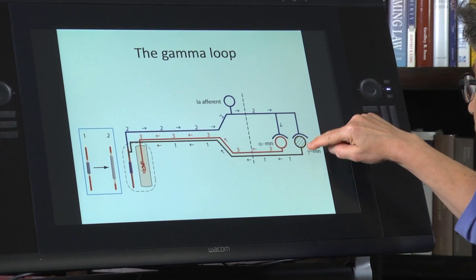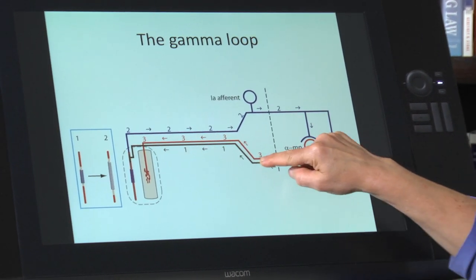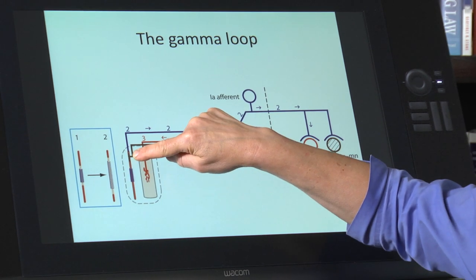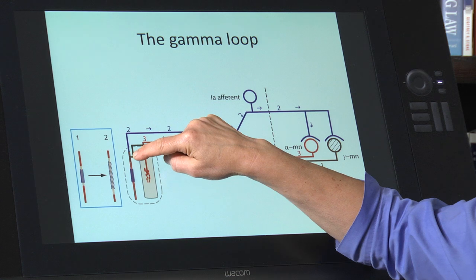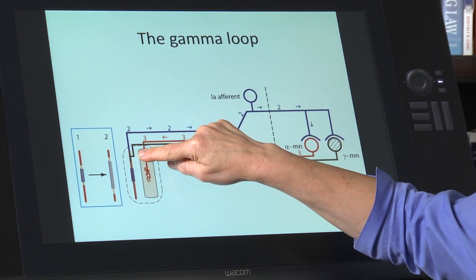Starting with activation of the gamma motor neuron, sending action potentials out to contract the polar regions of the intrafusal fiber.